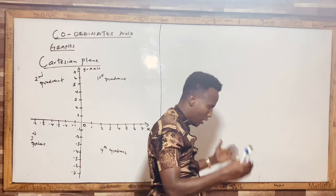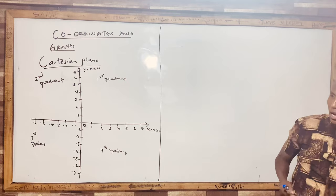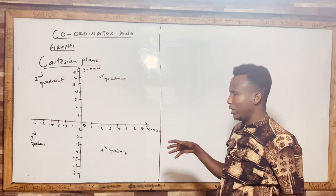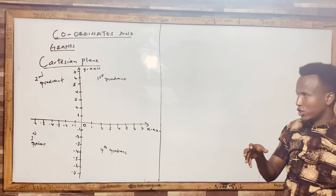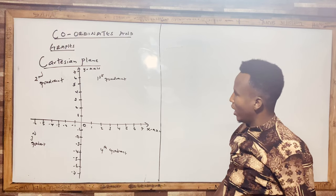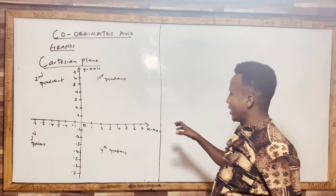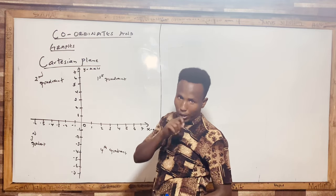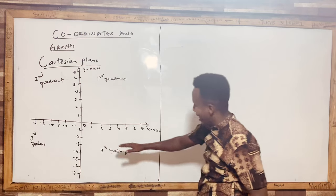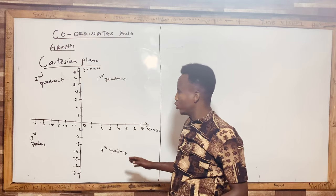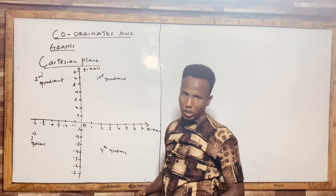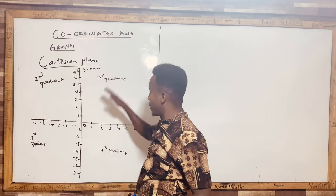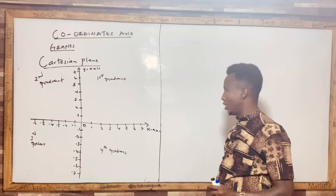These four quadrants make up the Cartesian plane, which is very important in mathematics. Now, before plotting, remember: x values to the right are positive, and x values to the left are negative. Y values going upward are positive, and y values going downward are negative.